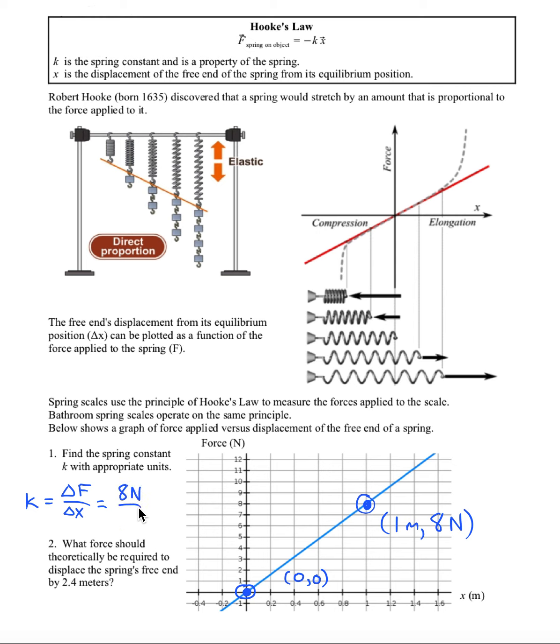So the spring constant is eight newtons per meter, and those are the units of the spring constant.